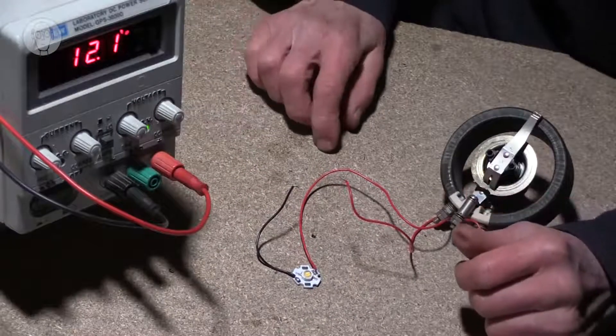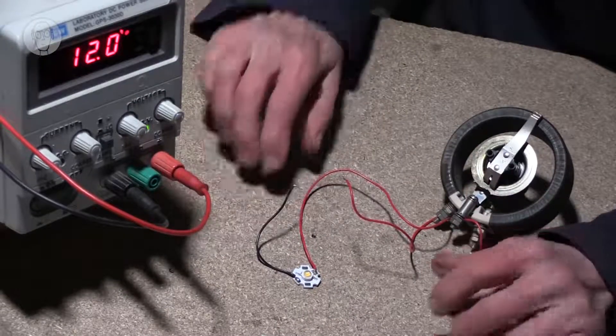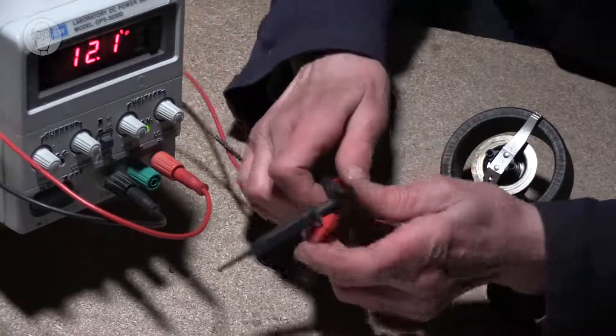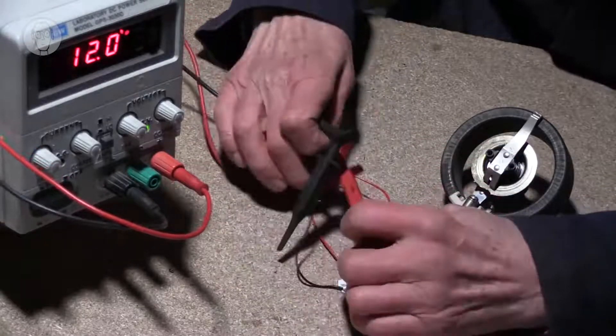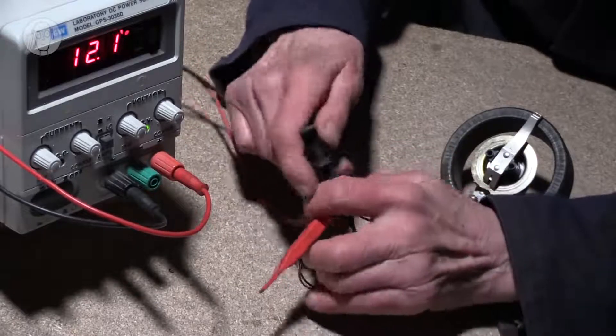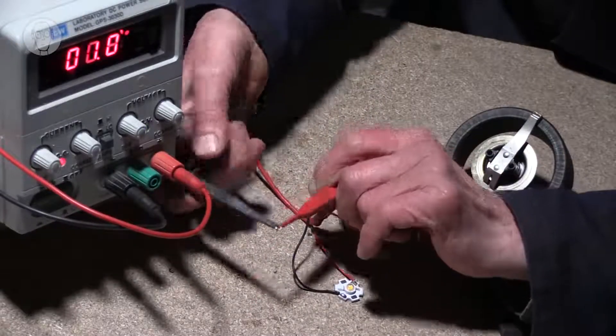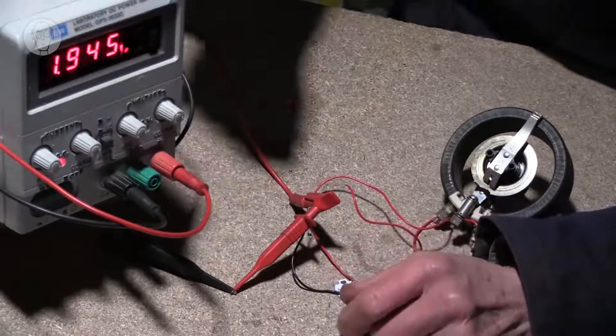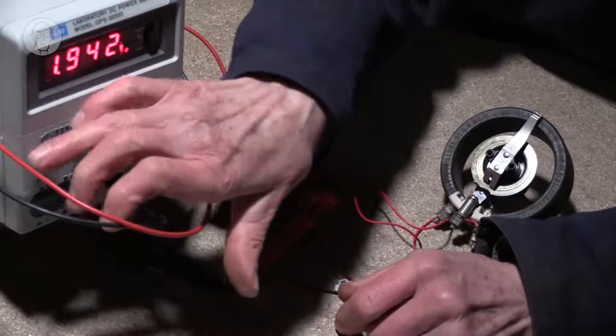A lot of these benchtop power supplies let you set the current as well, which is very useful. To do that, you short the two terminals and then turn the display over to the current, which is 2 amps at the moment, and now I wind down the current.